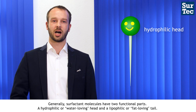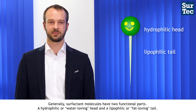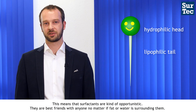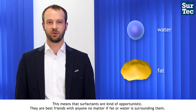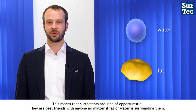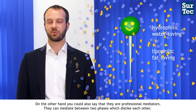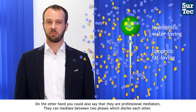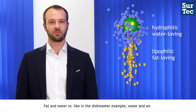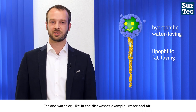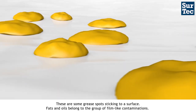So what is a surfactant and how does it work? Generally, surfactant molecules have two functional parts: a hydrophilic, or water-loving, head and a lipophilic, or fat-loving, tail. This means surfactants are opportunistic — they are best friends with anyone, whether fat or water surrounds them. You could also say they are professional mediators, able to mediate between two phases that dislike each other, such as fat and water, or water and air.